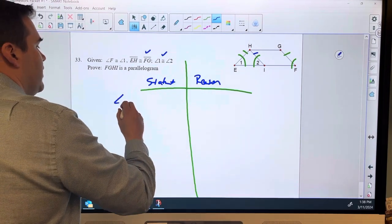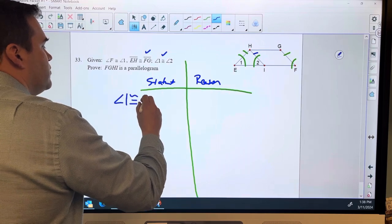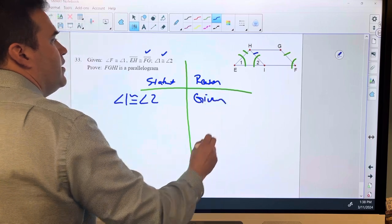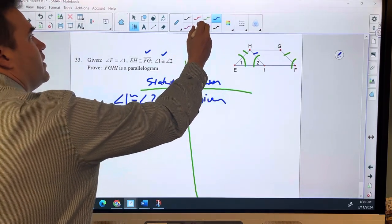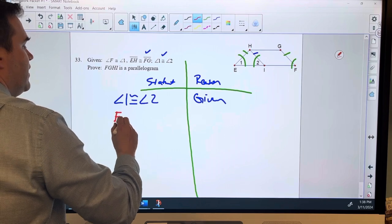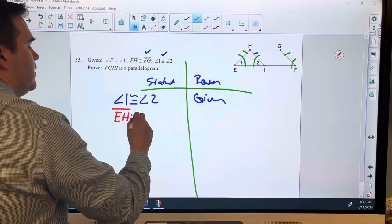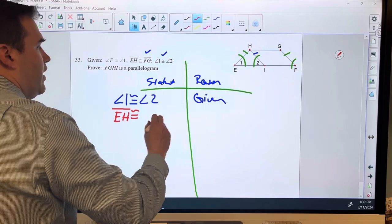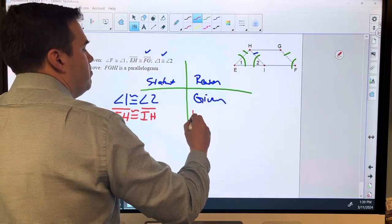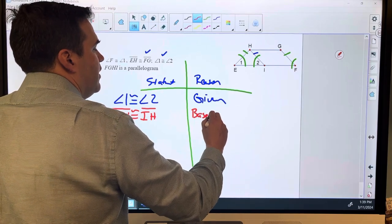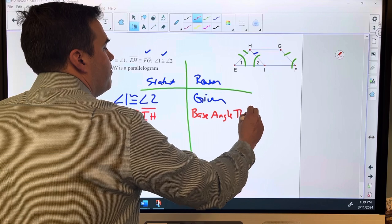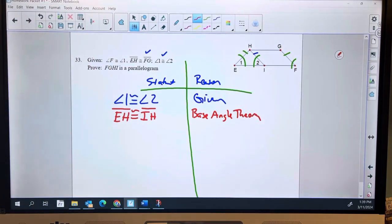Let's do it. Angle 1 is congruent to angle 2, given, and since angle 1 is congruent to angle 2, that will mean that EH is congruent to IH, and that's base angle theorem.